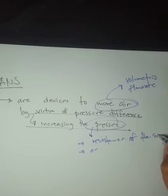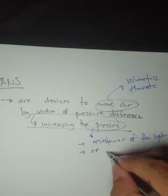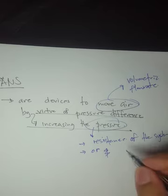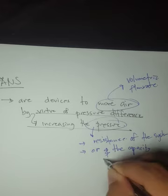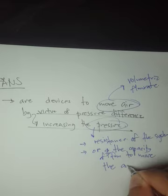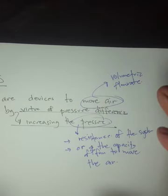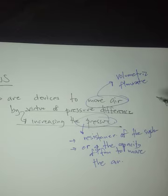Later we will deal with the static pressure of the fan itself and the pressure resistance of the system or building — essentially the capacity of a fan to move air against system resistance.